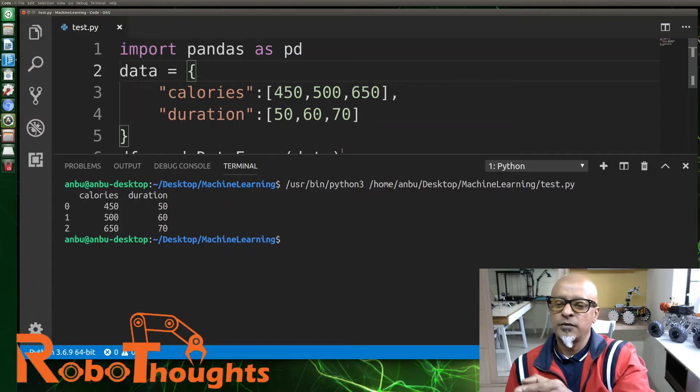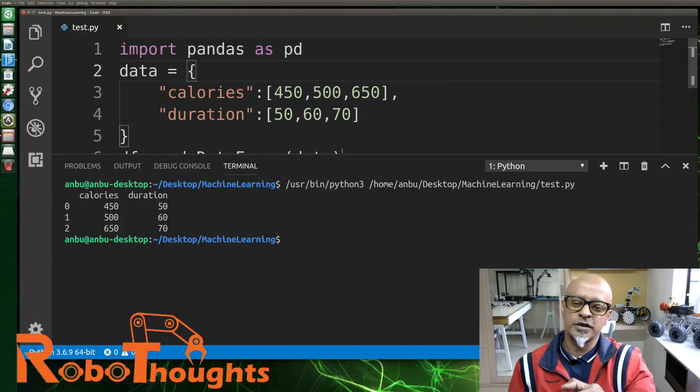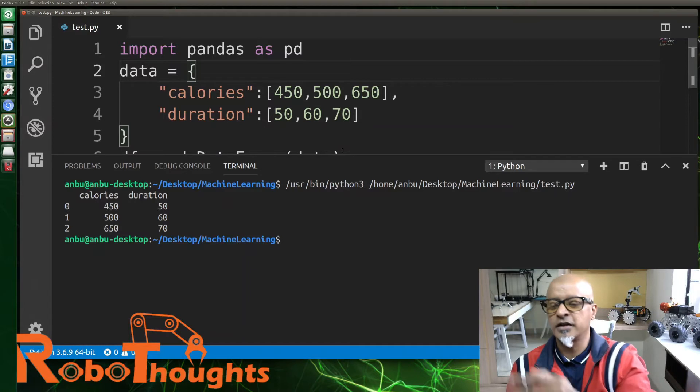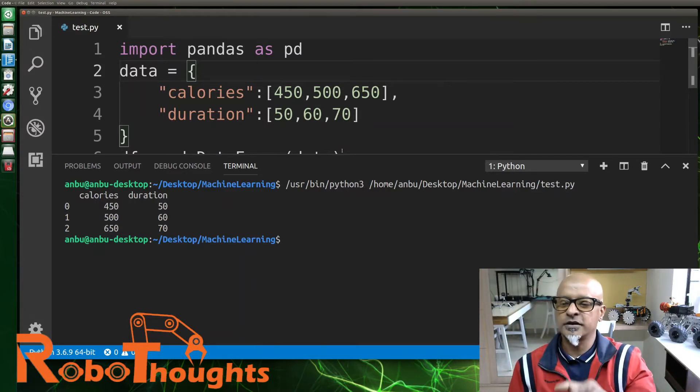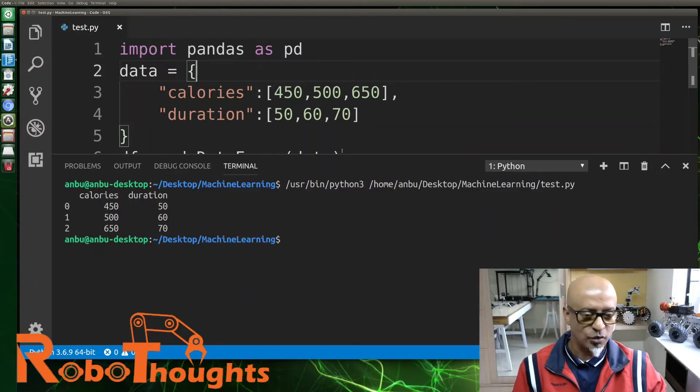If we run this program, you get the output in a column and a row. For example, zero has 450 calories and duration is 50 minutes. Index one has 560 calories, same way for two.